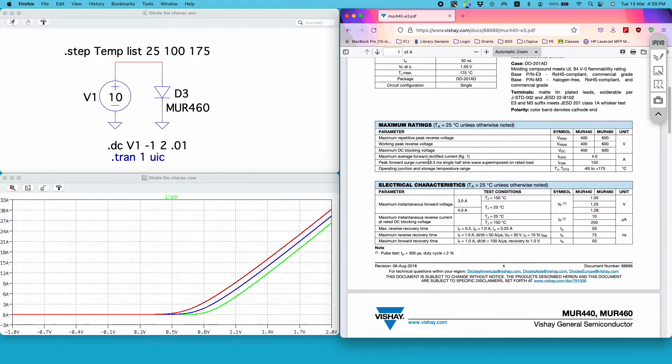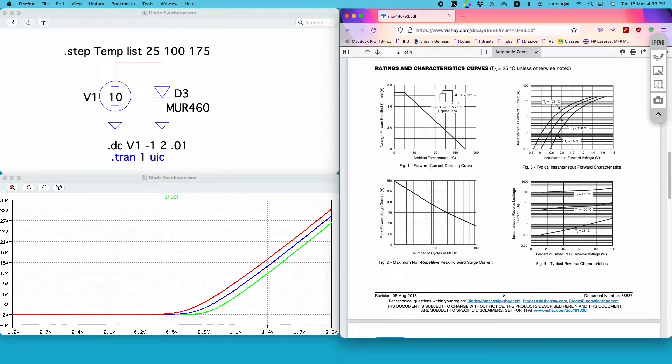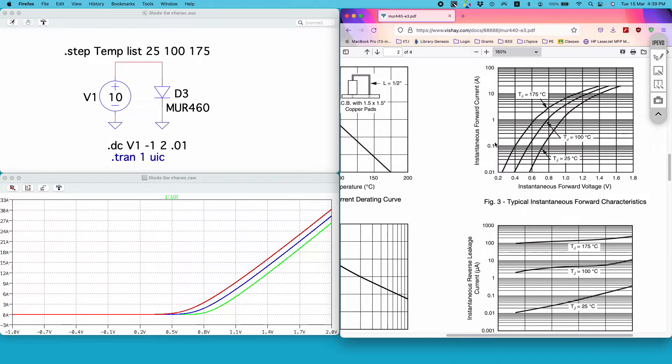You can also observe these characteristics of the power diode you are using. For example, here you can see this plot of instantaneous forward voltage drop versus forward current. Let's focus on this particular 1 amp current as an example.